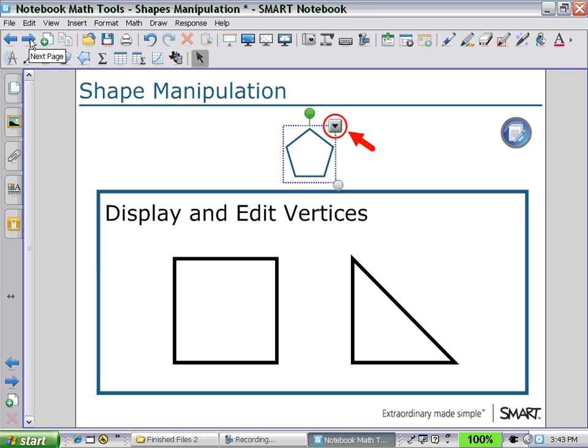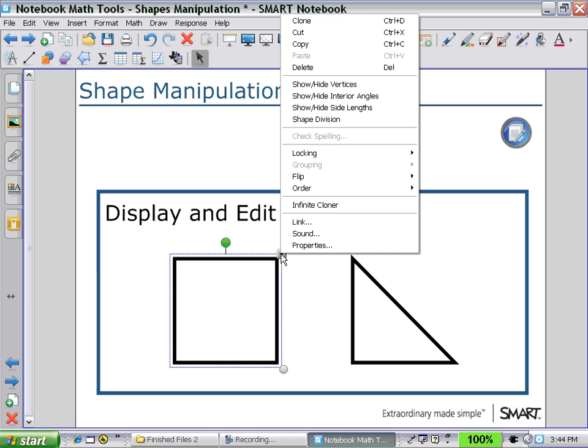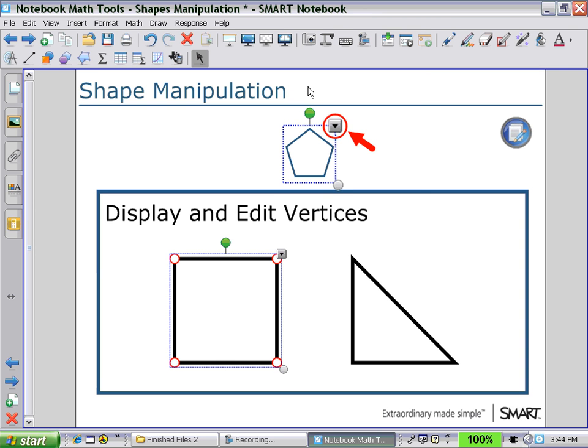First with shape manipulation. Here we can display and edit vertices of a square or a triangle. Select one of the shapes and then show and hide the vertices. Select a vertex and drag it to change its shape.